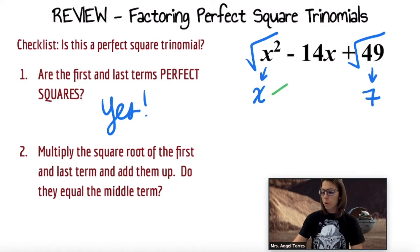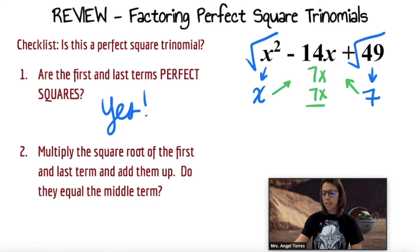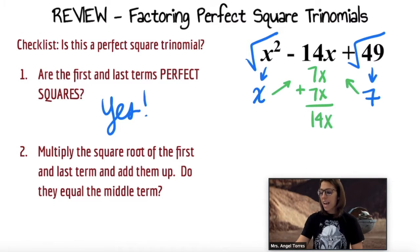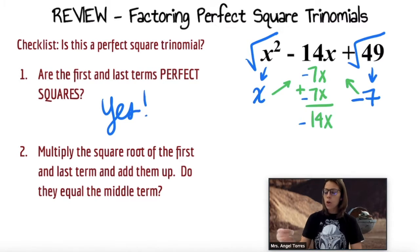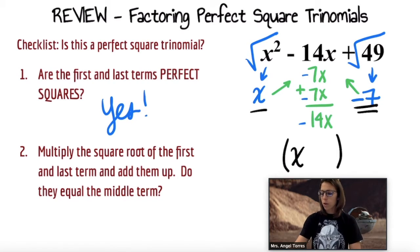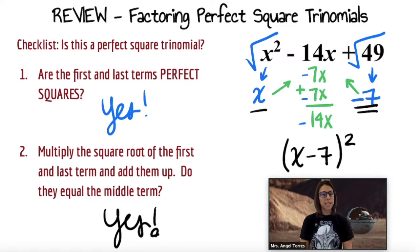On to number two. Multiply them together and see if they add up to the middle term. x times 7 is 7x. 7x plus 7x is 14x, and we're looking for negative 14x. Well, that's because there are two square roots of 49: positive 7 and negative 7. x times negative 7 is negative 7x, which added to itself does give us negative 14x. So let's set up our binomial. Our first term is x, second term is negative 7. Because it satisfied both, we are able to factor this as a perfect square.